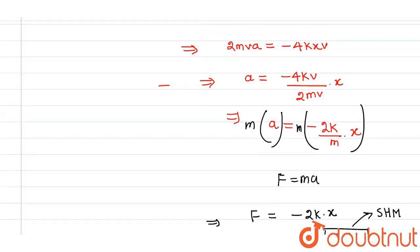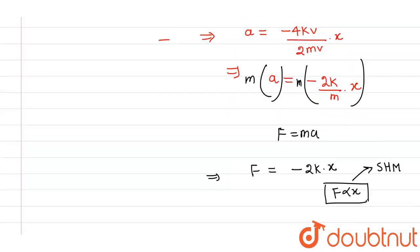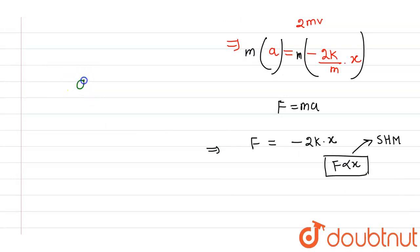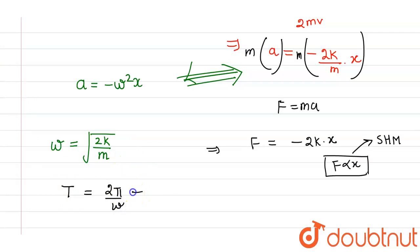To find the time period: in simple harmonic motion, acceleration is given by −ω²x. Comparing with our equation, ω = √(2k/m). Since the time period in SHM is given by 2π/ω, substituting gives the time period T = 2π√(m/2k). This is the final answer for the time period.